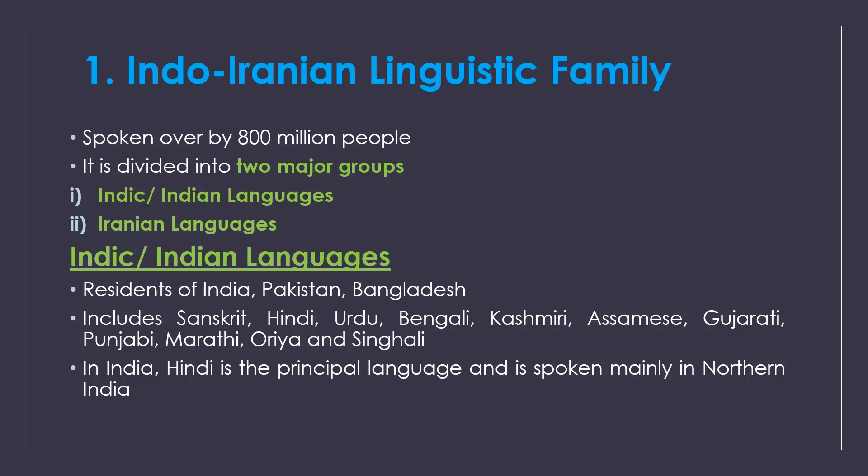The Indo-Iranian linguistic family has around 8 million people and is divided into two groups: Indic or Indian languages, and Iranian languages. Indic or Indian languages include Hindi, Urdu, Bengali, Kashmiri, Gujarati, Punjabi, Marathi, Oriya, and Sinhalese.